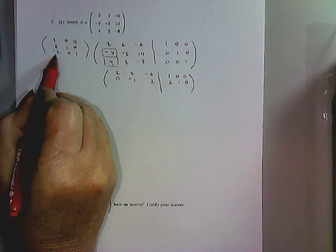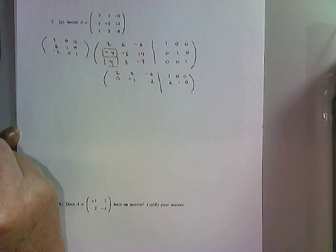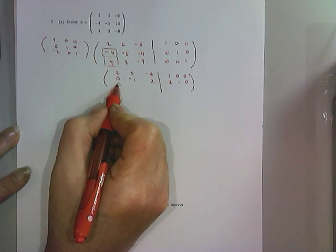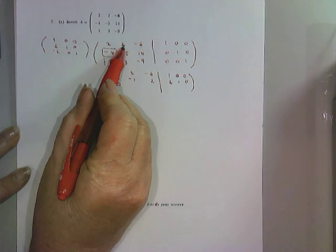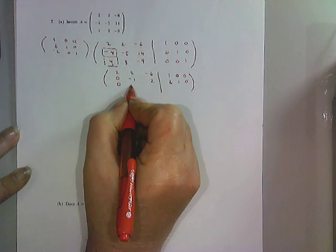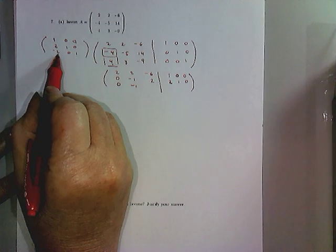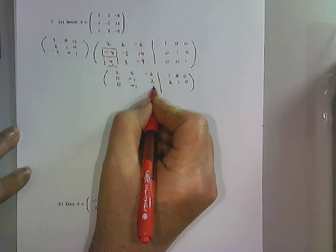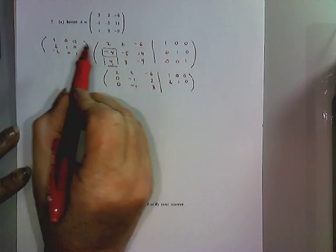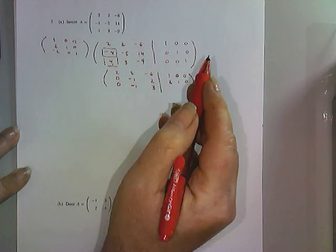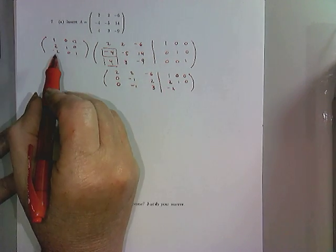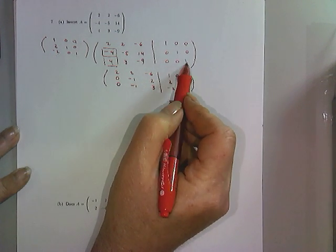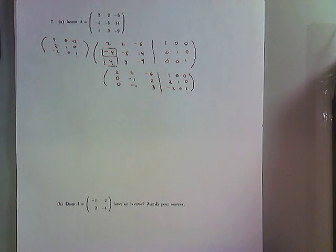The third row is found by taking the first row, multiplying by negative 2, and adding it to the third row. So we have 2 times negative 2 is negative 4, plus 4 is 0, as we wished. 2 times negative 2 is negative 4, plus 3 is negative 1. Negative 2 times negative 6 is positive 12, minus 9 is positive 3. Negative 2 times 1 is negative 2, plus 0 gives negative 2. Negative 2 times 0 plus 0 is 0, and negative 2 times 0 plus 1 is 1. So our first step is done.